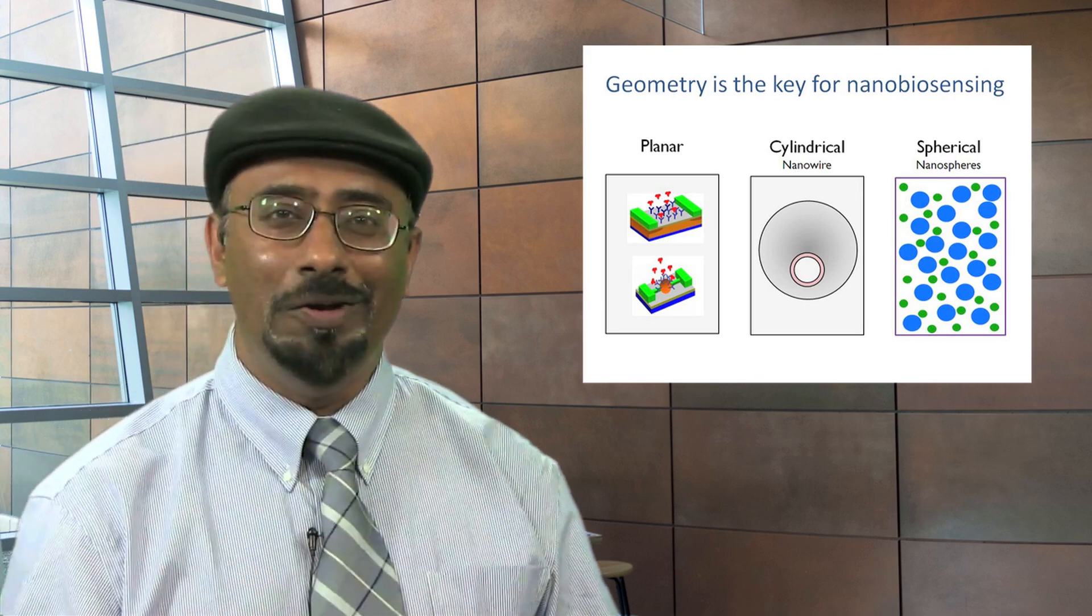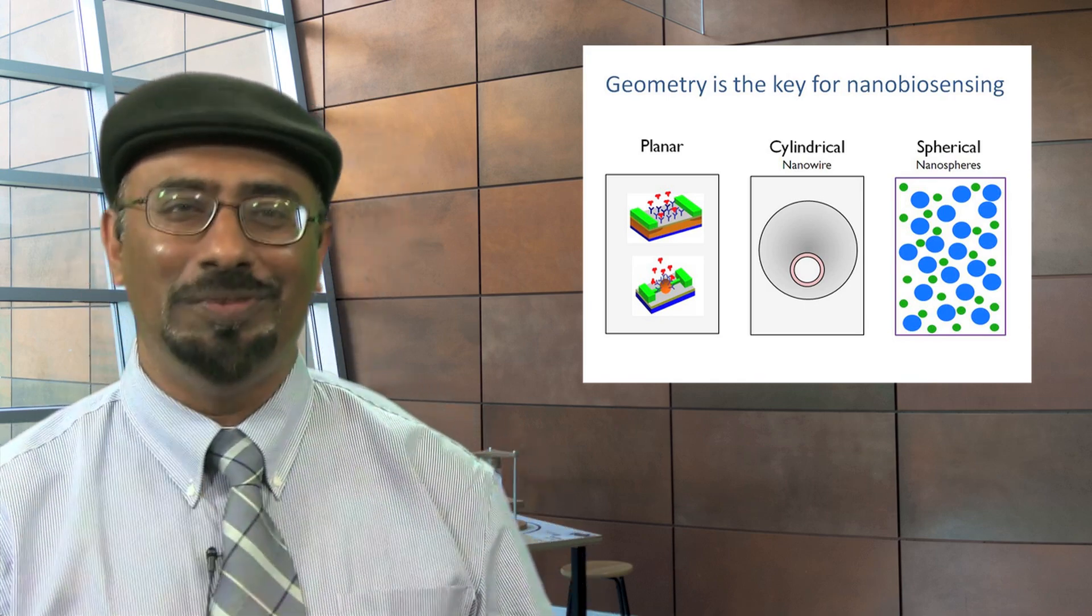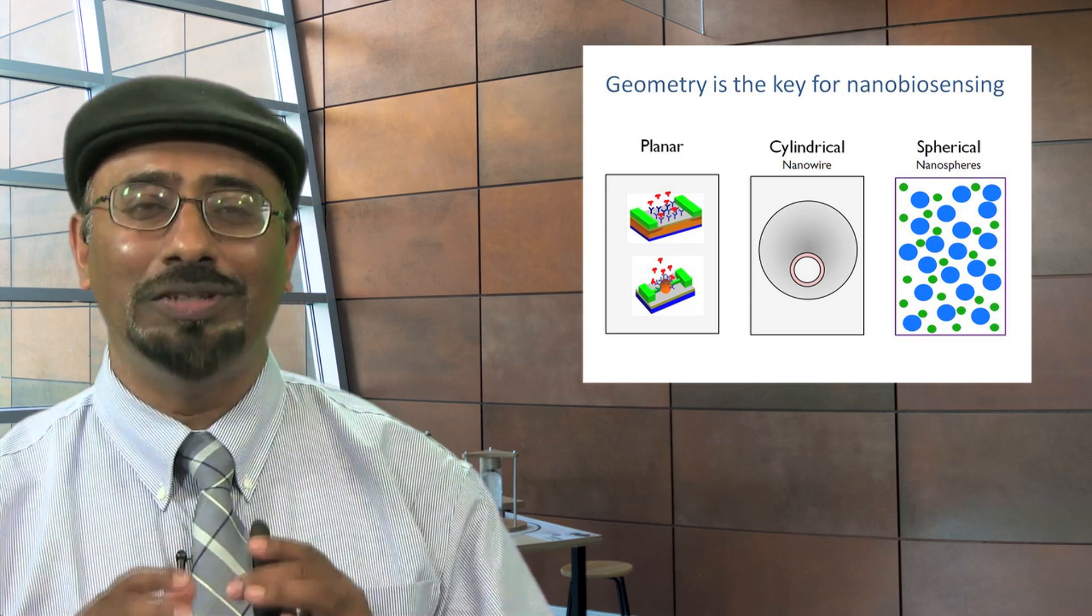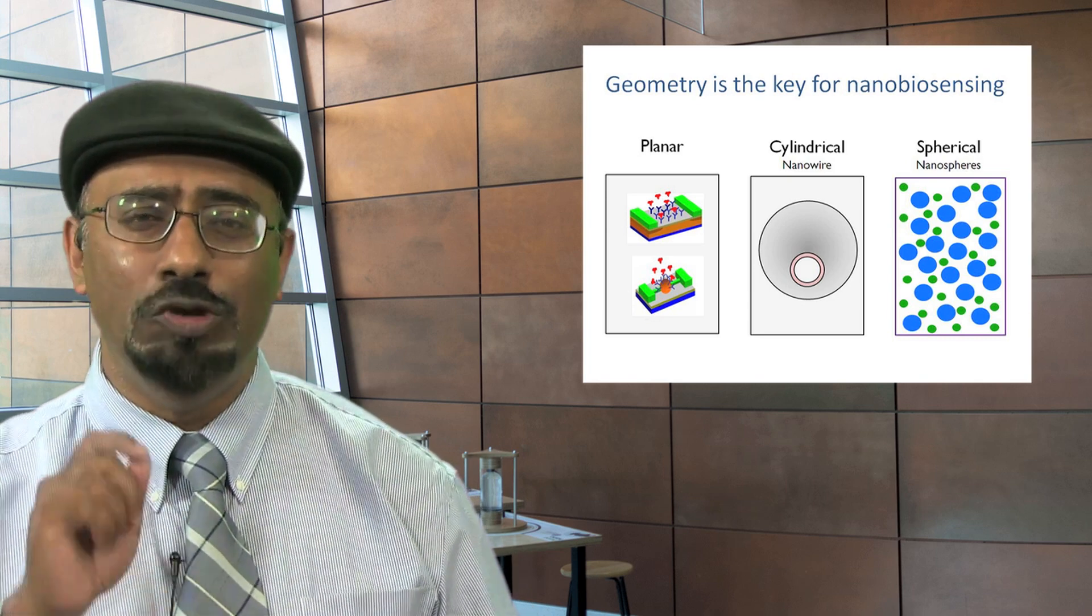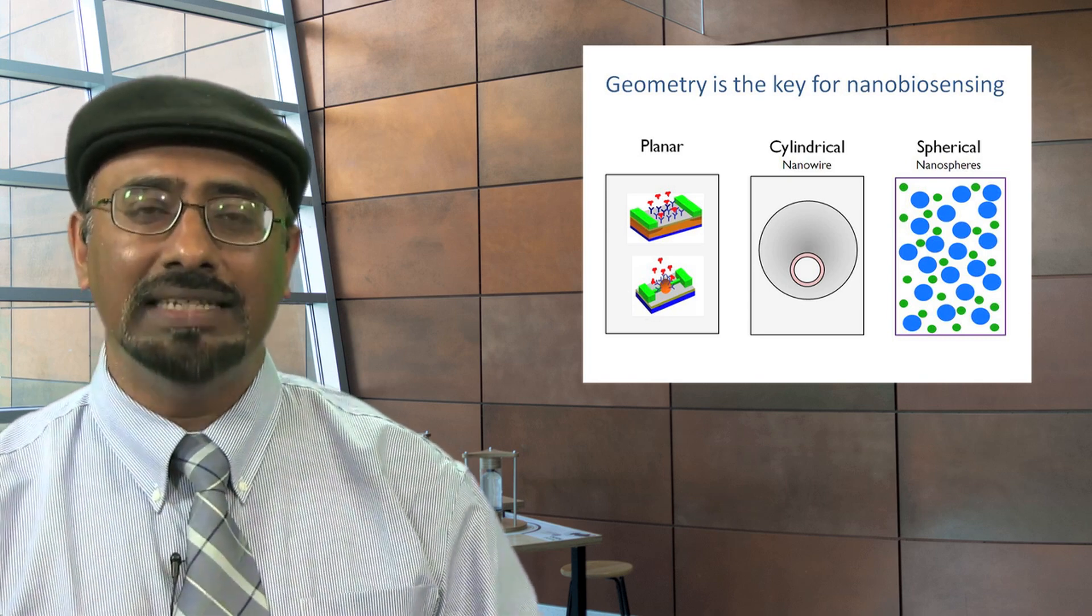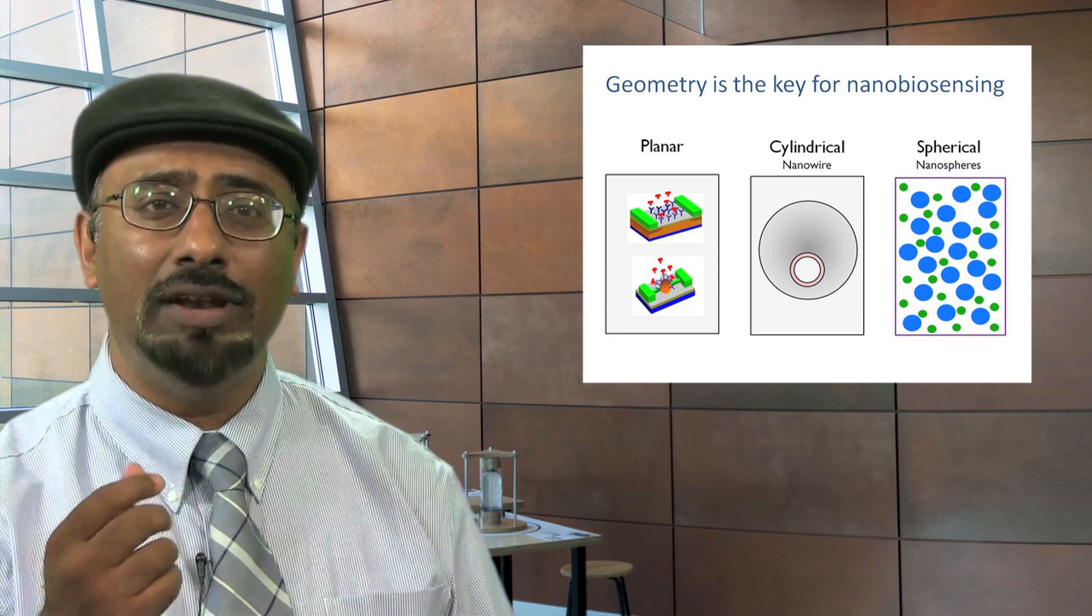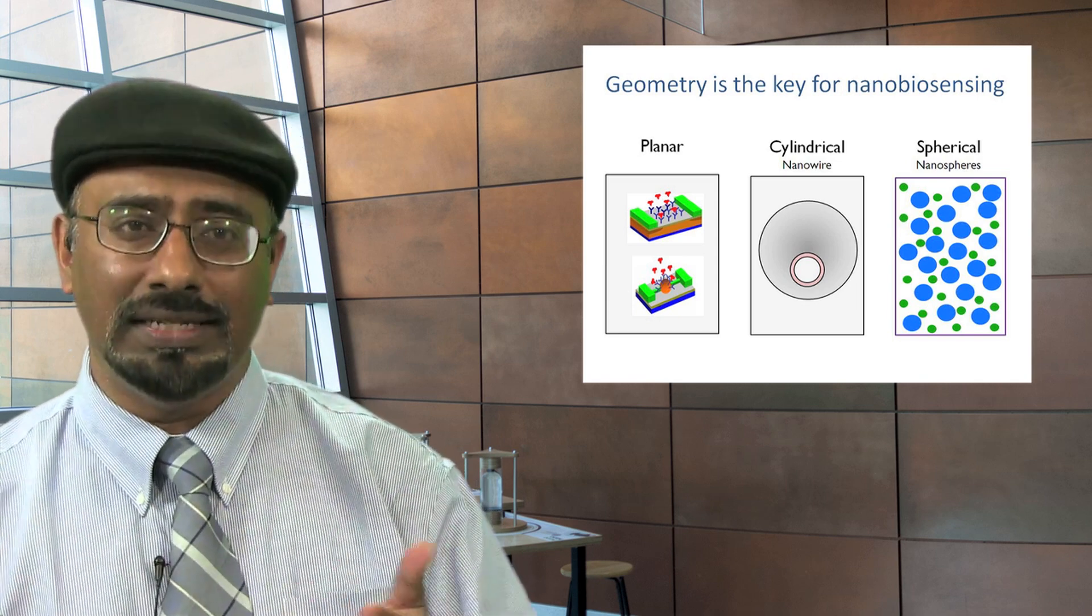In particular, what we will find remarkable is the importance of geometry. For example, a planar sensor in the old days is nowhere as sensitive as a nanowire sensor or a nanosphere sensor. And you will understand why.